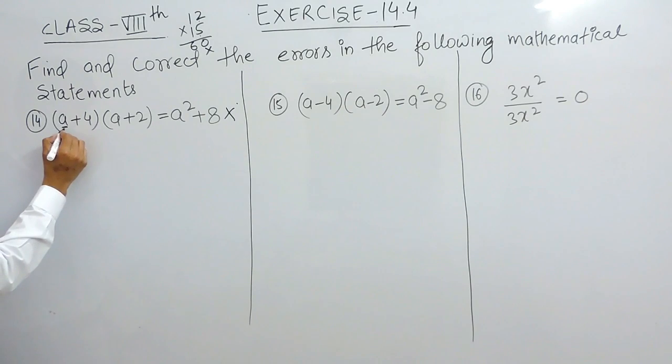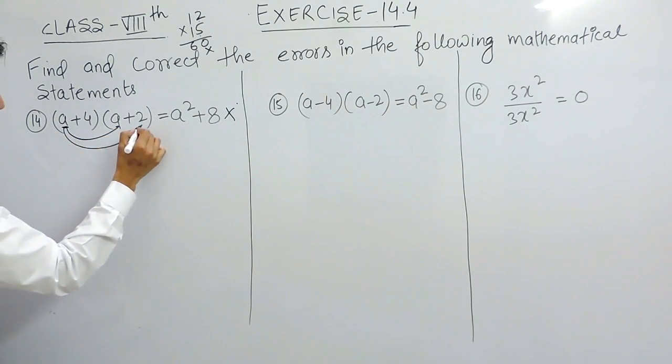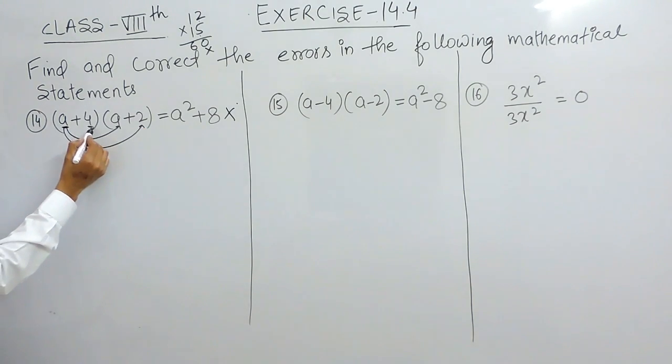Similarly, if you want to solve this, you have to multiply first a with this term and this with this. After that you have to multiply this another term with this and again with this. Then only it would be correct. So let's solve it.